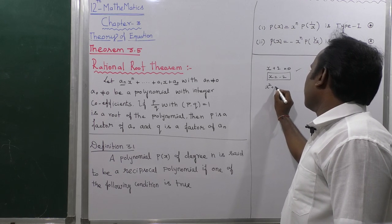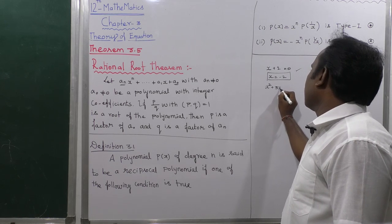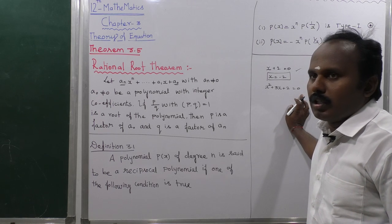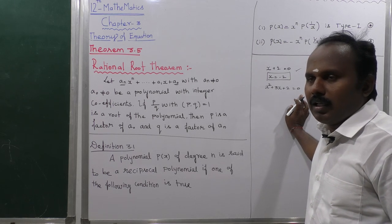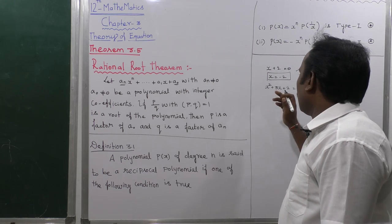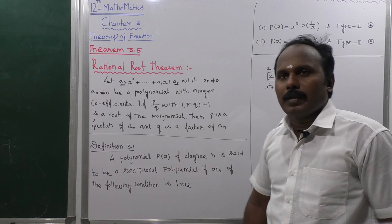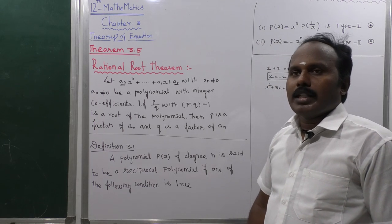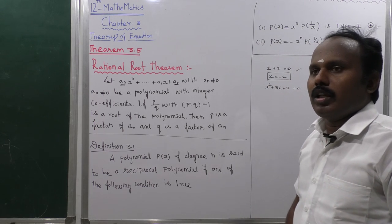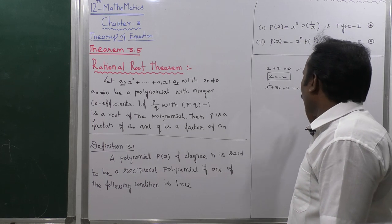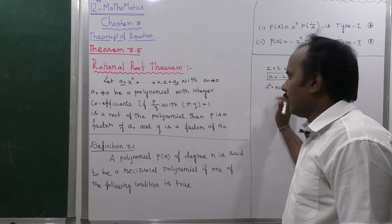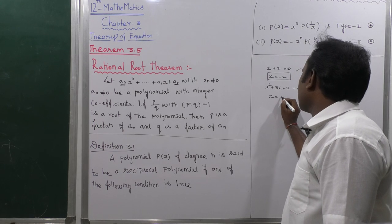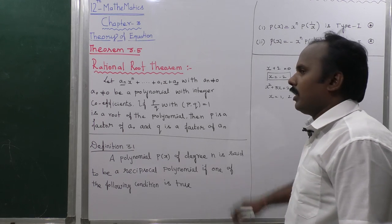Suppose x² + 3x + 2 = 0. This can be solved by factoring. One method is the formula method: x = (-b ± √(b² - 4ac)) / 2a. By using either method, we get x equal to some values — for example, -1 and -2.